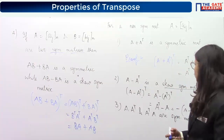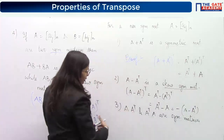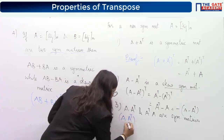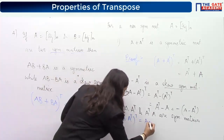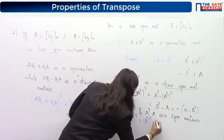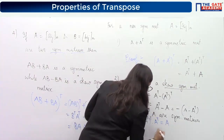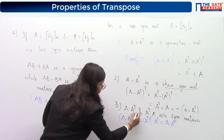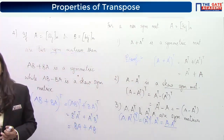For the third property, to check if A into A transpose is symmetric, take its transpose. The transpose of A·A transpose requires interchanging the order: A transpose transpose into A transpose. A transpose transpose is again A, so we get A into A transpose — the same as the original matrix. Therefore A·A transpose is a symmetric matrix.